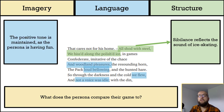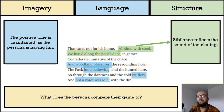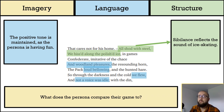There are a few instances where the positive tone is maintained. 'Pleasures' is a word heavily associated with positive feelings. 'Loud bellowing' could show how happy and excitable the children are as they play. The hyperbolic 'we flew' seems positive, and 'not a voice was idle' could again suggest the happiness and excitement of the children.